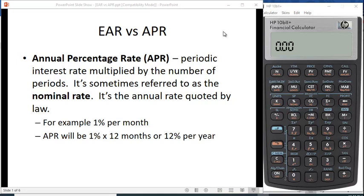The annual percentage rate, APR, is the periodic interest rate multiplied by the number of periods. It's sometimes referred to as the nominal rate, and we'll see when we get to the financial calculator they refer to it as the nominal rate or NOM on the calculator.